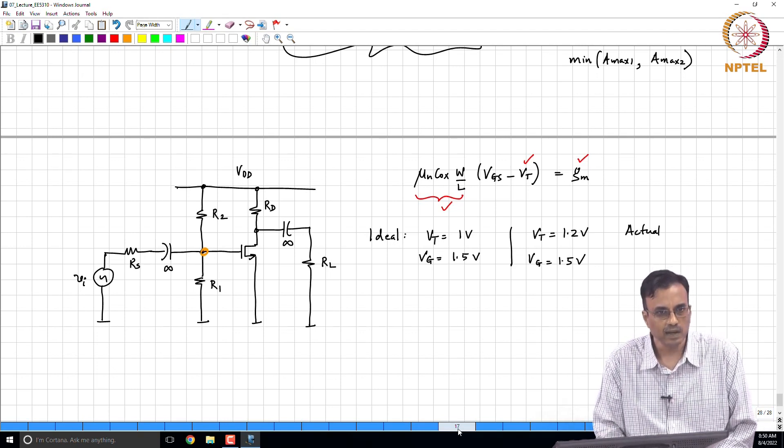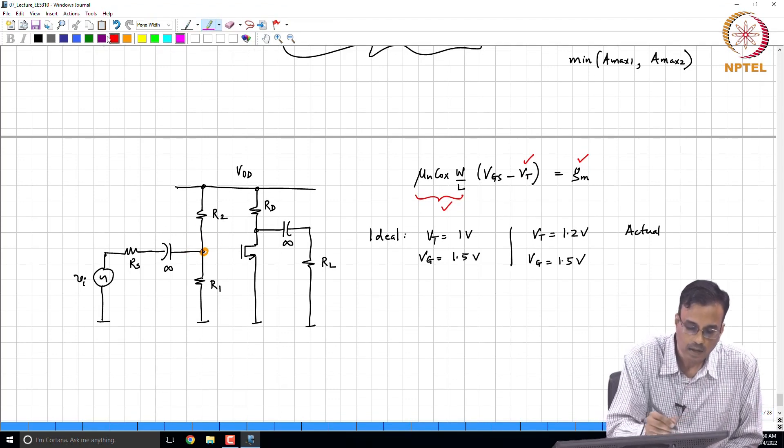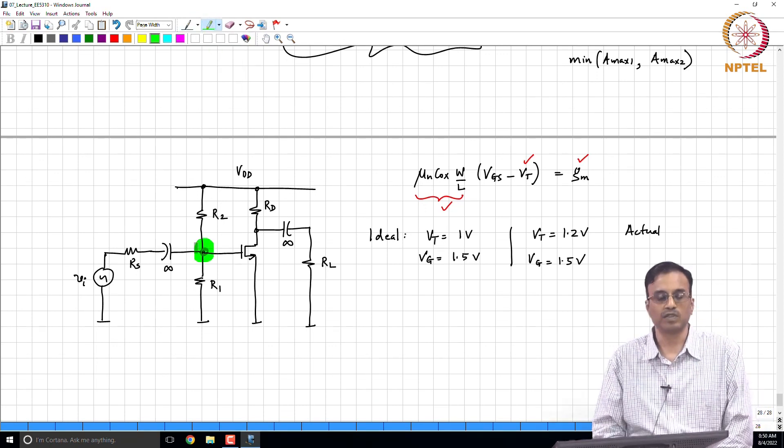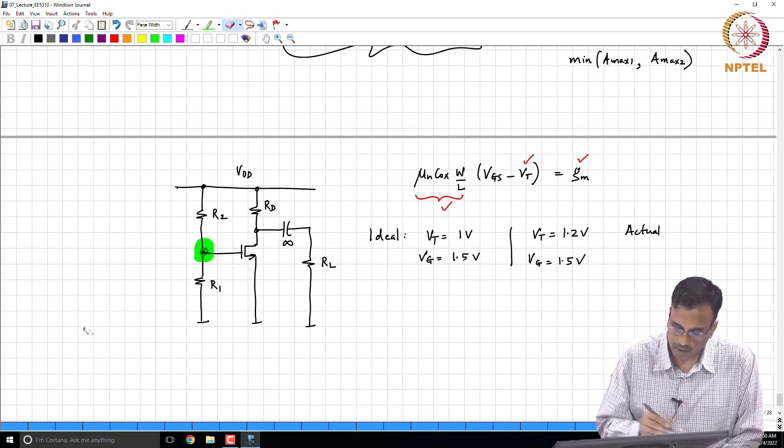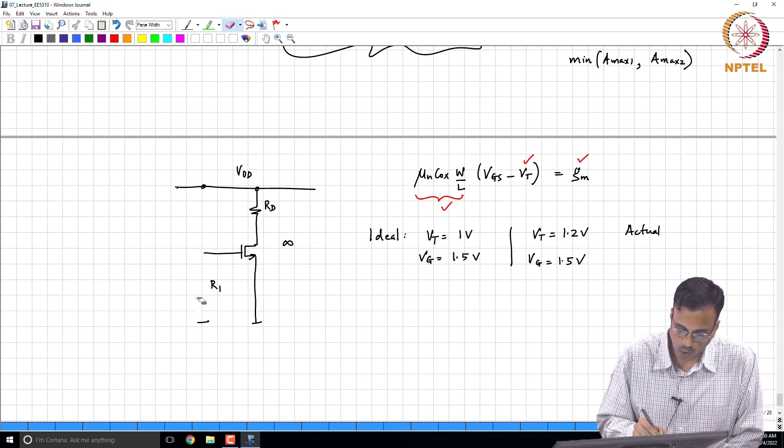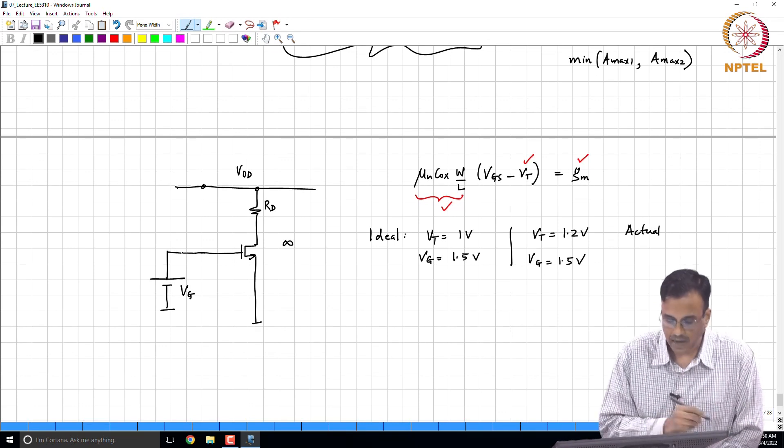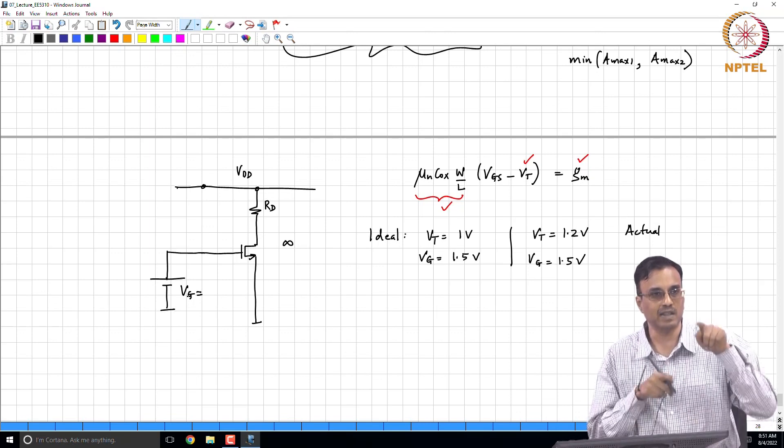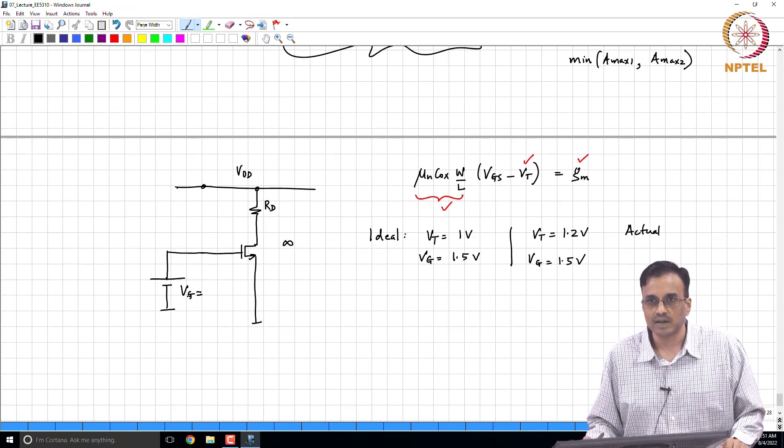And the root cause of the problem, as you can see, is that the equivalent of this battery here - remember for the quiescent operating point, all these are irrelevant. What is that input network doing? All that it is doing is generating some bias voltage and applying it to the gate. And the root cause of the problem is that this battery, that V_G is a dumb battery. It does not know anything about the transistor.